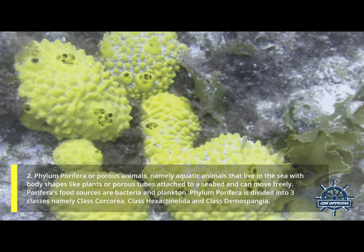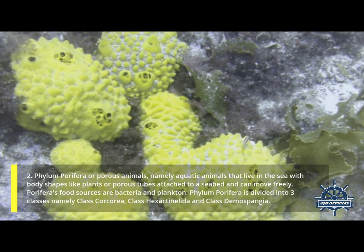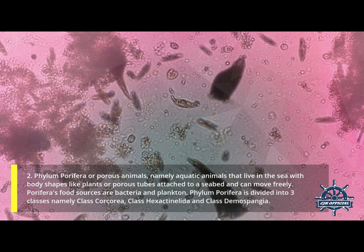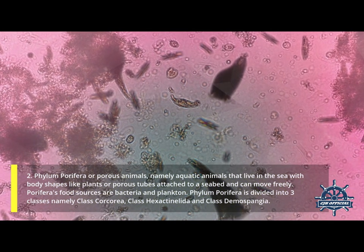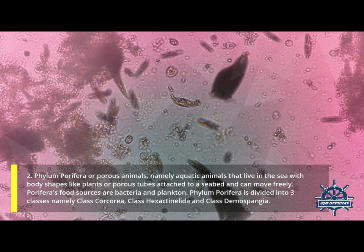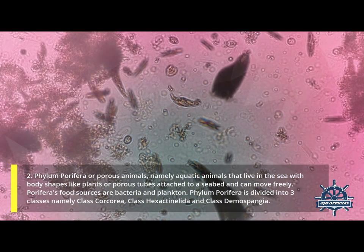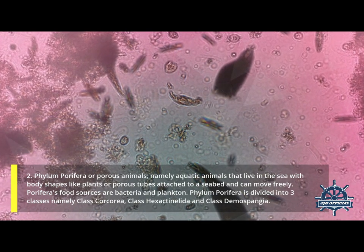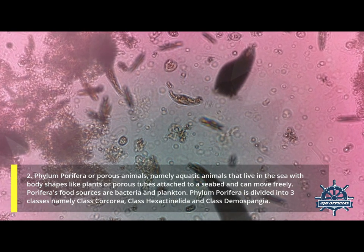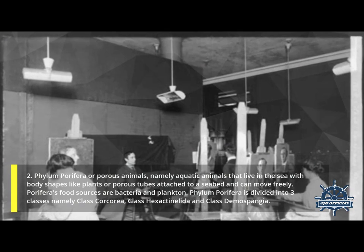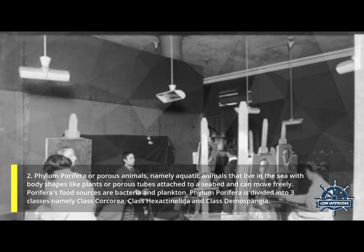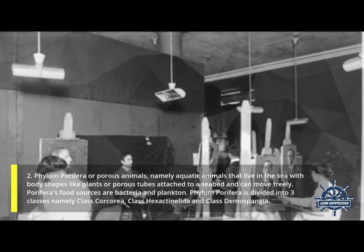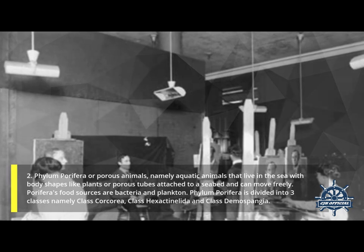Second, Phylum Porifera, or porous animals — aquatic animals that live in the sea with body shapes like plants or porous tubes attached to a seabed. Porifera's food sources are bacteria and plankton. Phylum Porifera is divided into three classes: Calcarea, Hexactinellida, and Demospongiae.